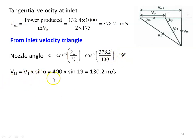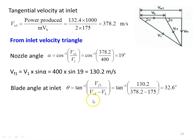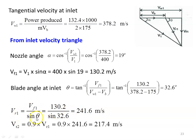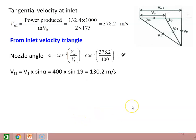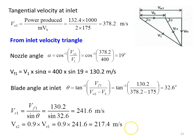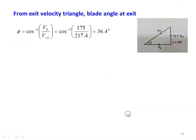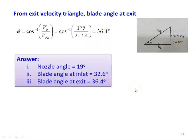VF1 equals V1 sin alpha equals 400 sin 19 equals 130.2 m/s. Blade angle at inlet theta equals tan inverse of 130.2 divided by (378.2 minus 175) equals 32.6 degrees. VR1 equals 130.2 divided by sin 32.6 equals 241.6 m/s. VR2 equals 0.9 into 241.6 equals 217.4 m/s. For axial discharge, phi equals cos inverse of 175 divided by 217.4 equals 36.4 degrees. Results: nozzle angle 19 degrees, blade angle at inlet 32.6 degrees, blade angle at exit 36.4 degrees.